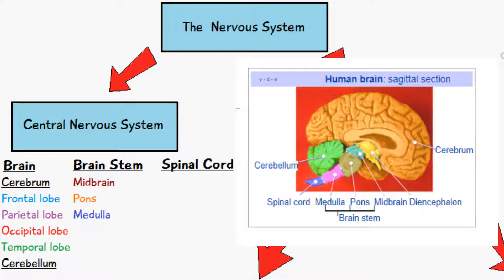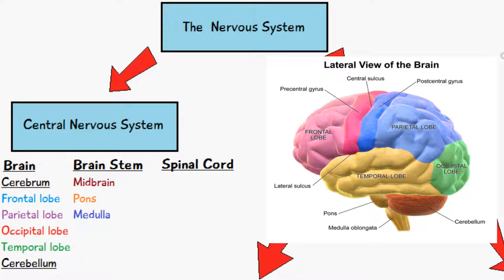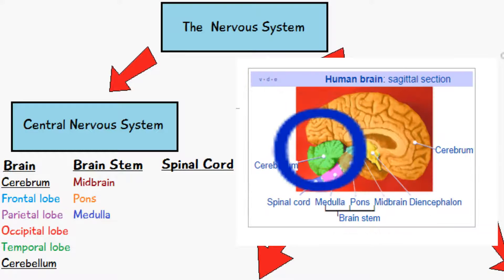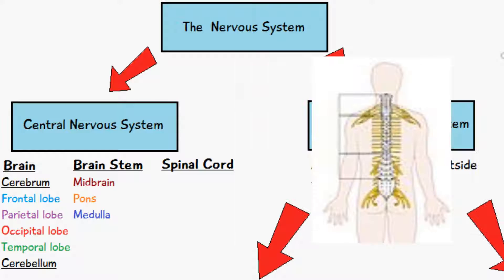Within the cerebrum itself there are four different lobes. We have frontal, parietal, occipital, and temporal lobes, and we have the cerebellum which you can see here. We have the brain stem which consists of the midbrain, pons, and medulla, and we have the spinal cord, which is nervous tissue located in the vertebra of humans.